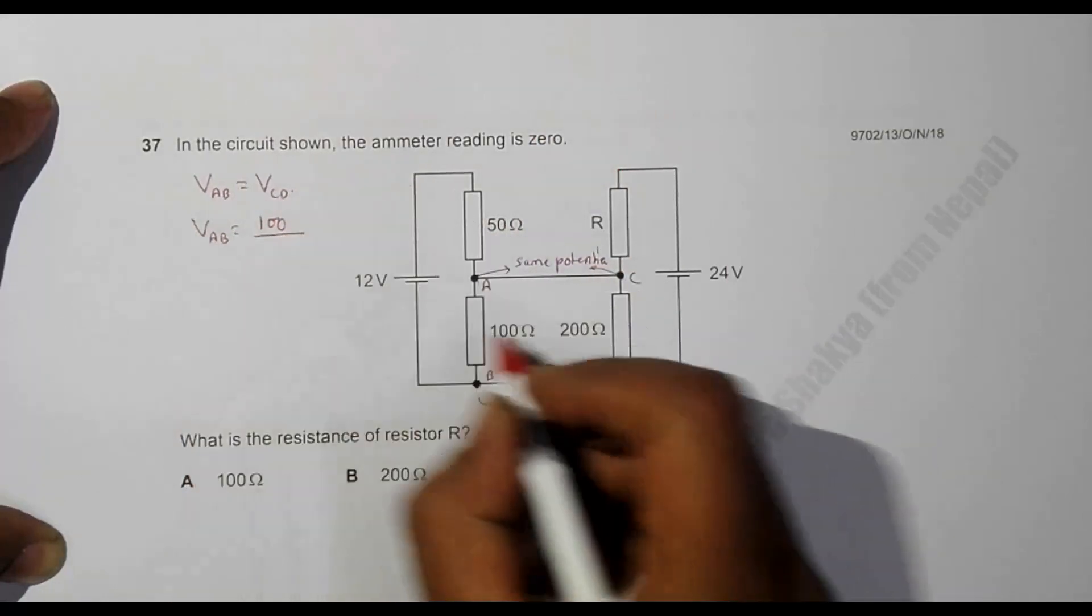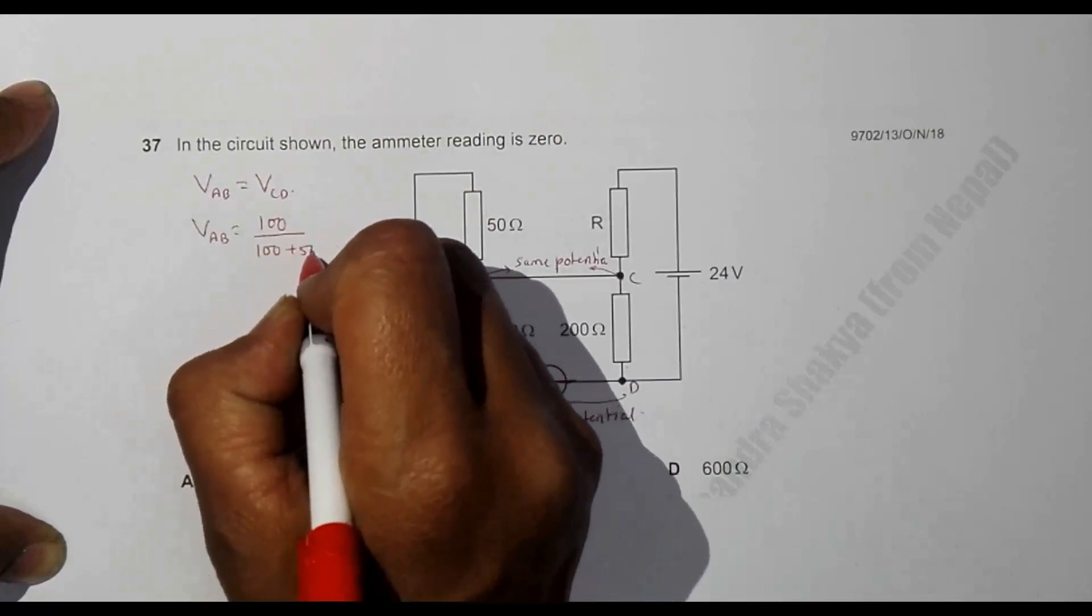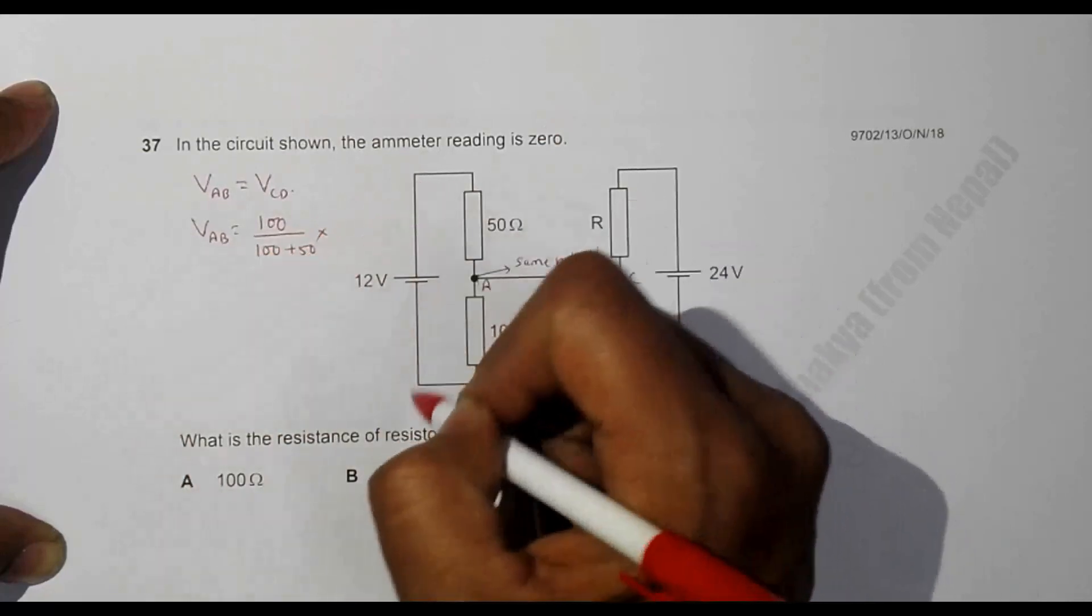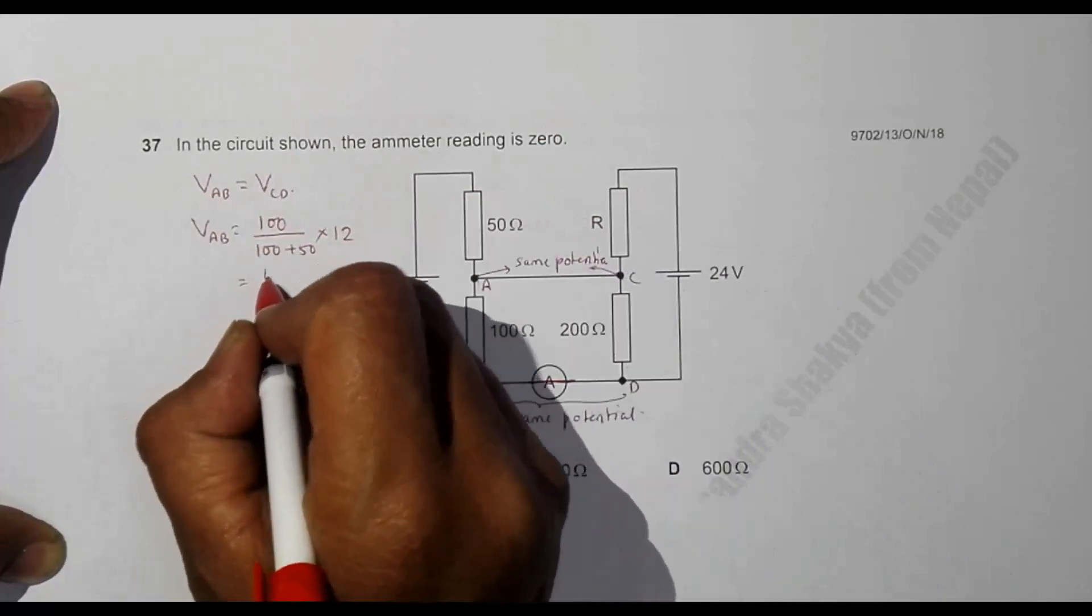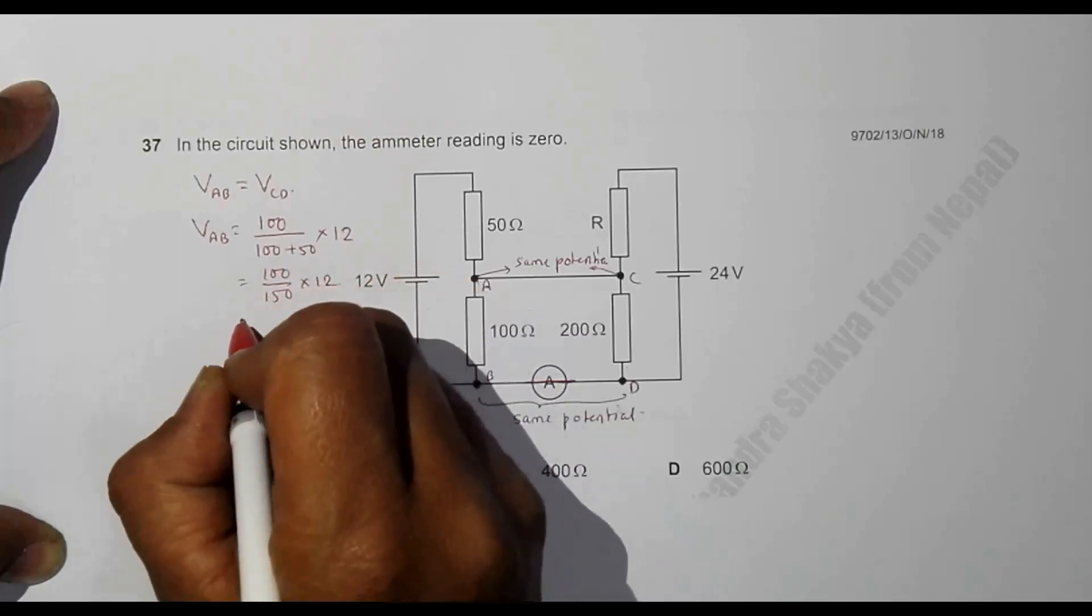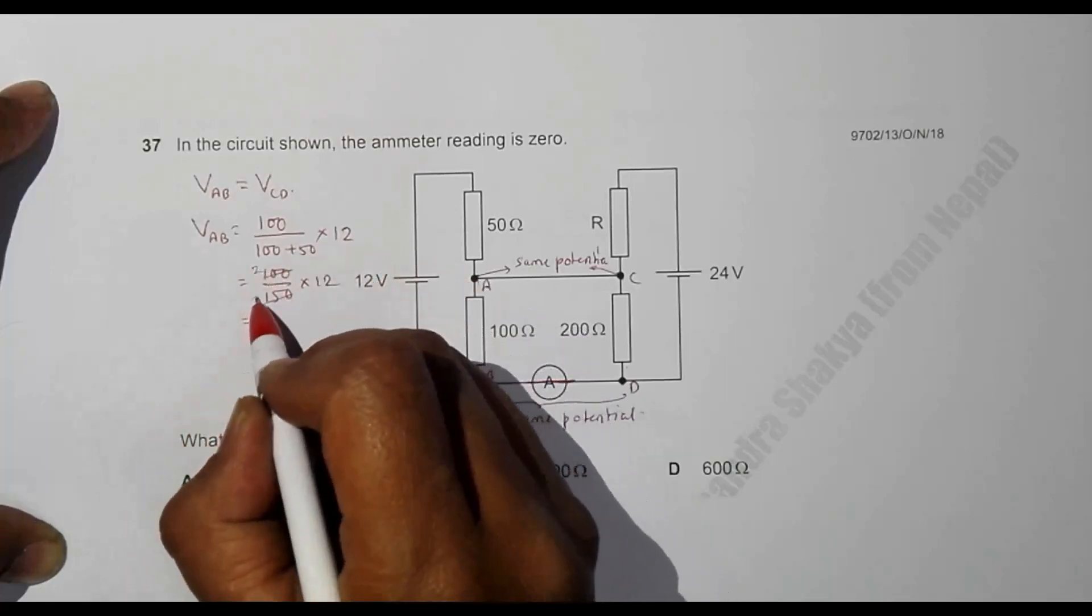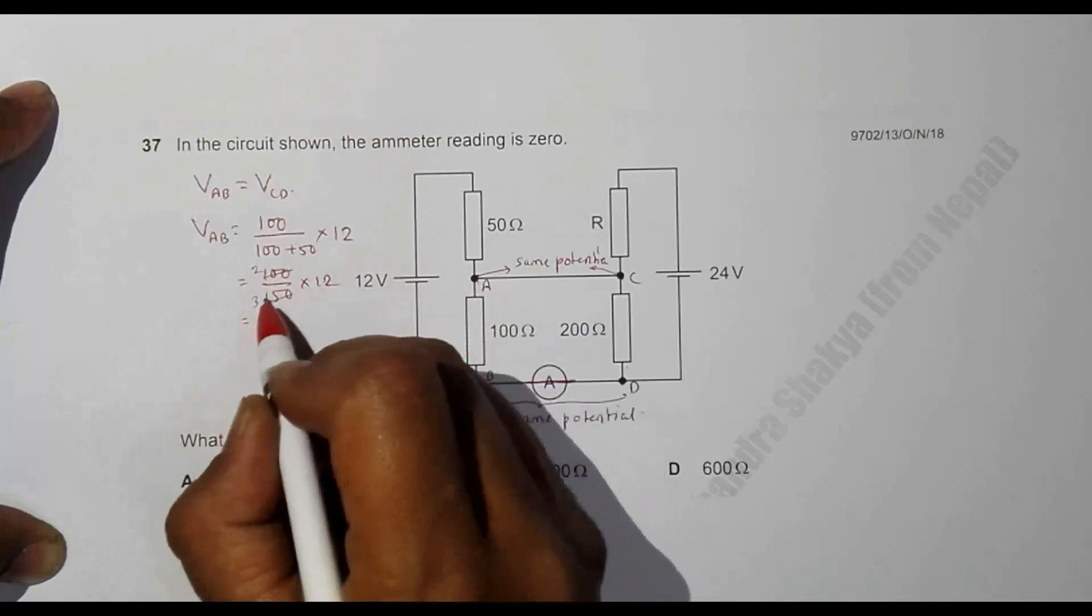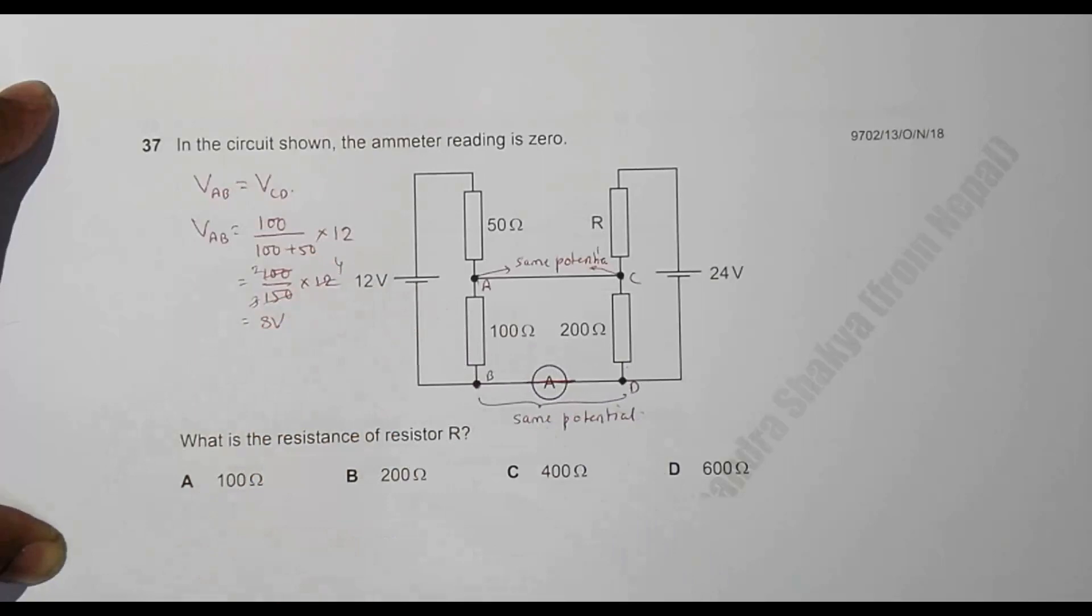So it will be equal to 100 by 150 into 12. This is two-thirds, so three times four is 12, so it is 8 volts. VAB should be equal to 8 volts.